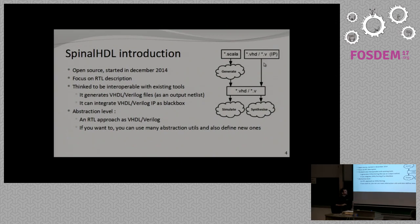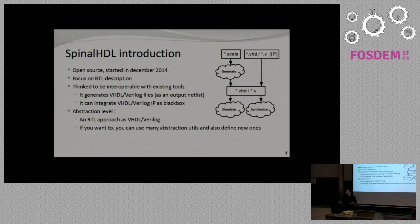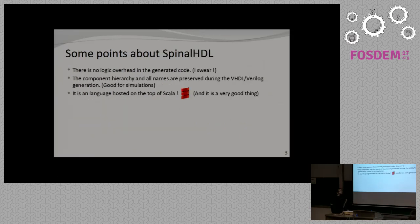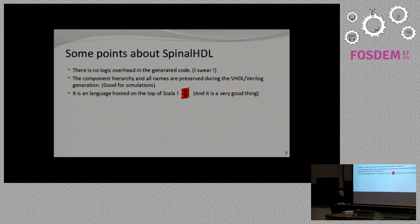It's quite compatible with existing flows and existing IPs. The abstraction level starts at the same level as VHDL and Verilog, a little bit different, but on top of that you can build new abstraction levels. You can go away from the mess of wires which is hardware design, to really say what you want. There is no logic overhead in the generated code because SpinalHDL is not an HLS approach — it's really more like an RTL approach where you have to design gates and registers. So there is no overhead; you will not lose performance by using it.